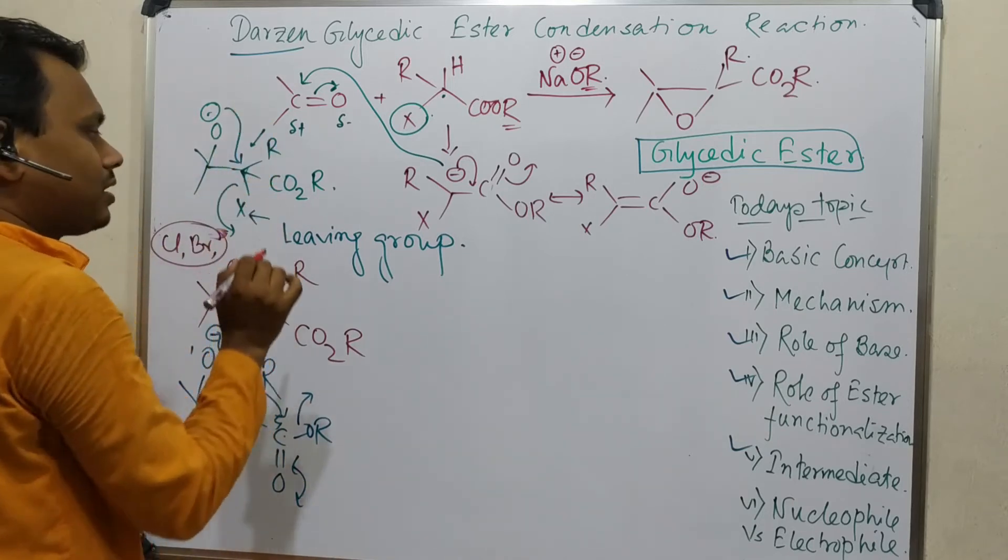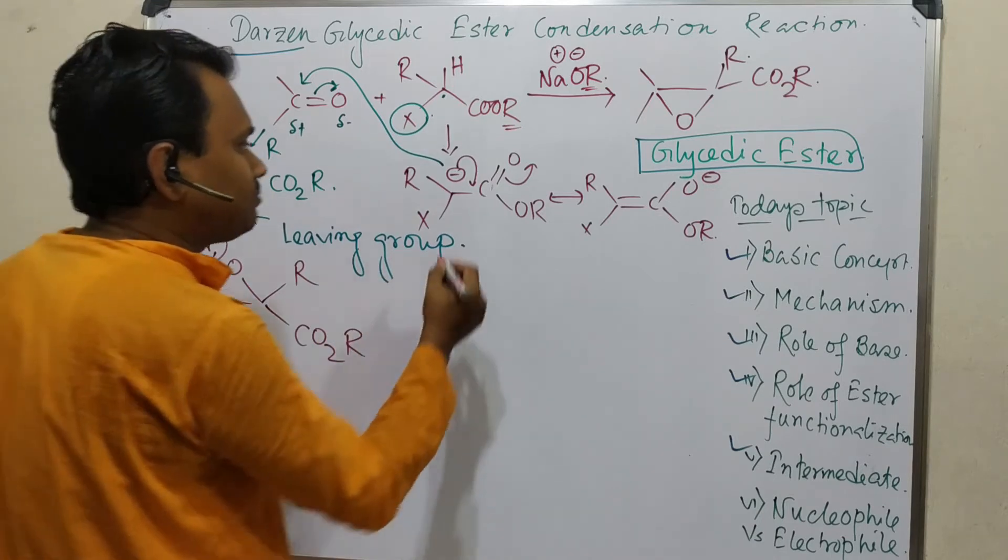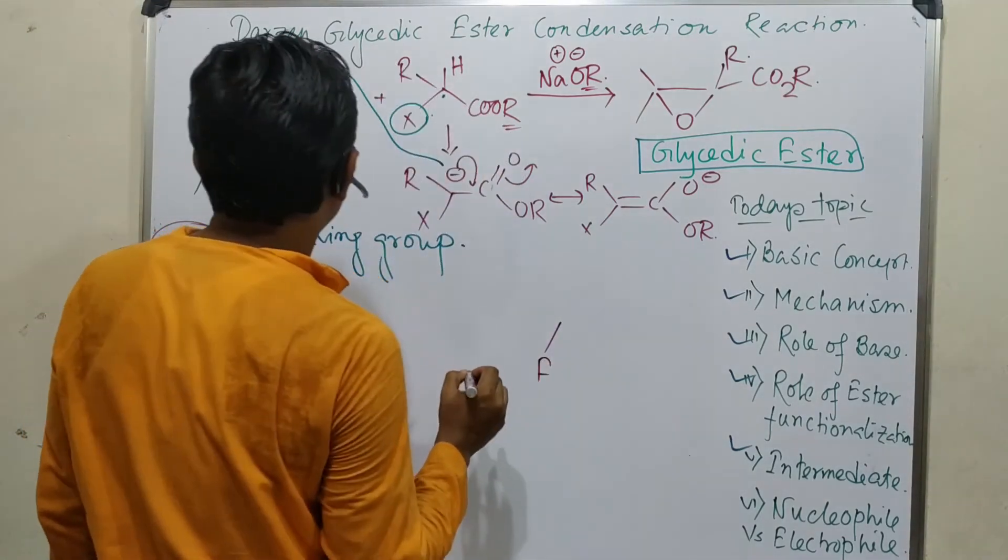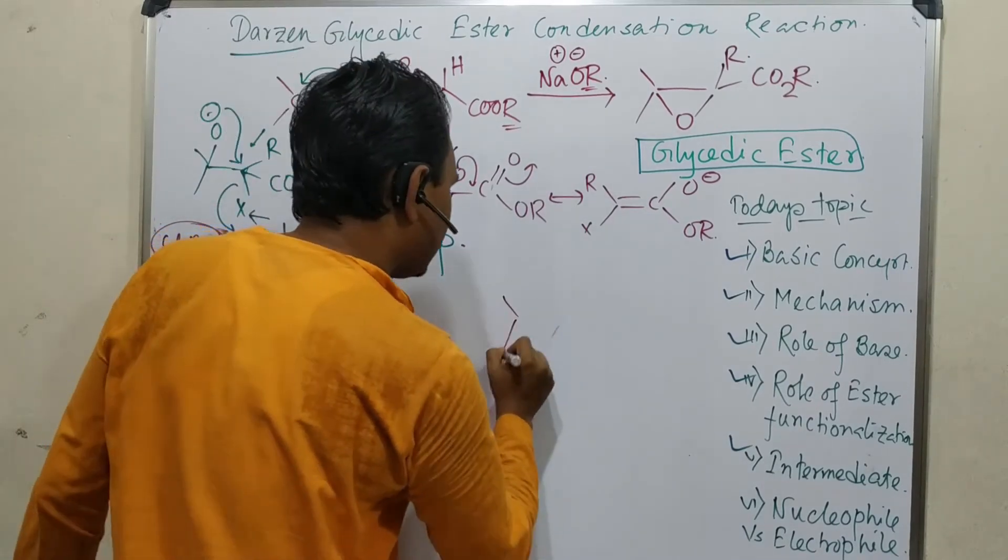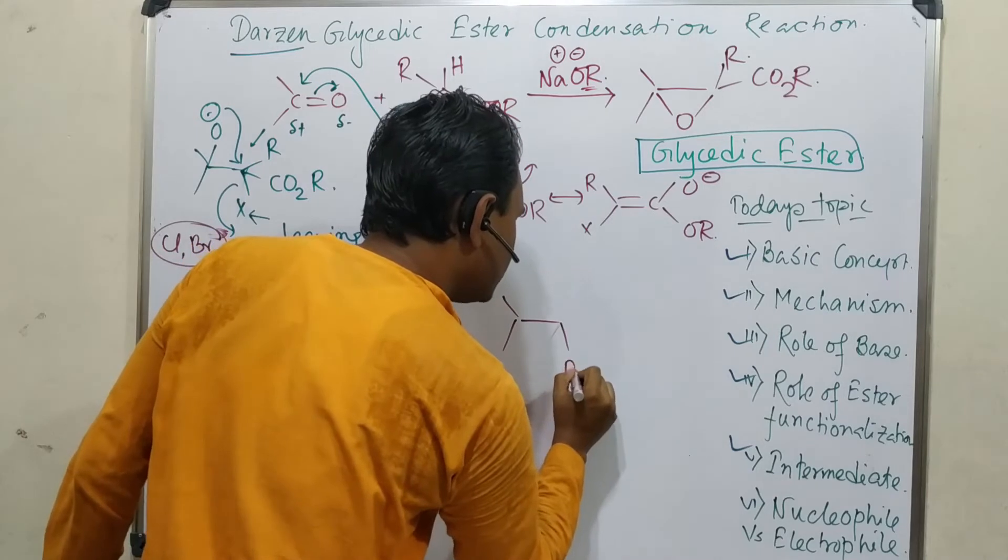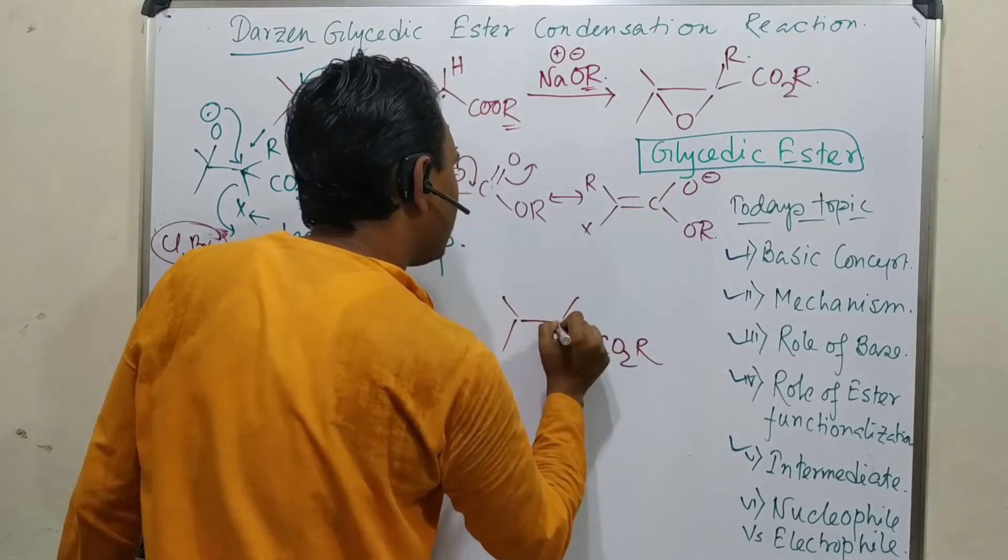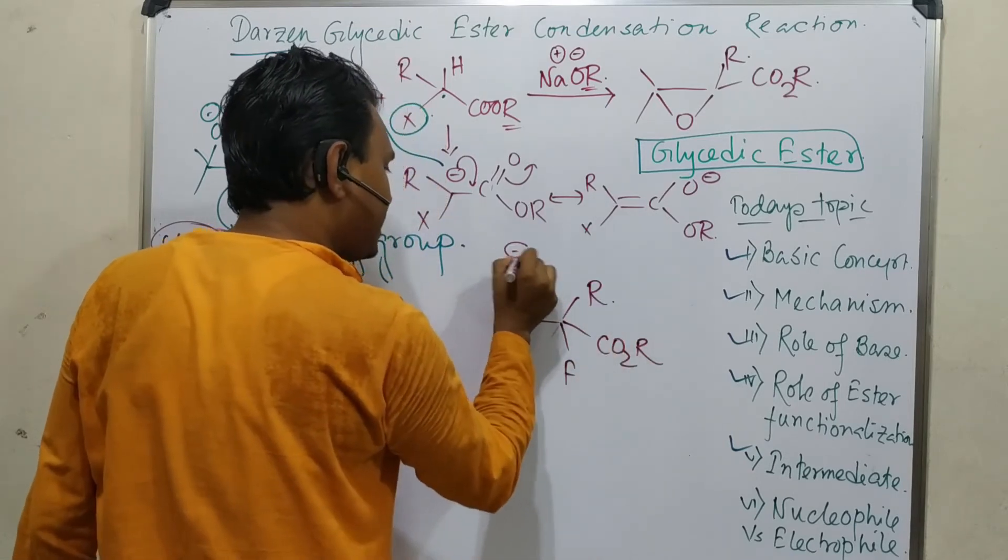But if we make it a bad leaving group, one example: if we take this as fluoro. Let's draw it again, then we will have proper visualization. C=O-OR, this is another R, and here O minus. Fine? So we know fluorine is not a good leaving group.